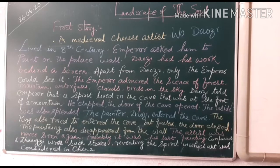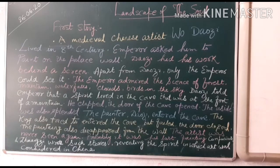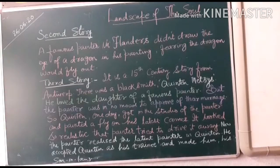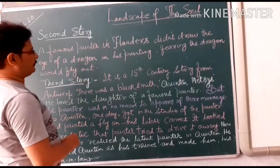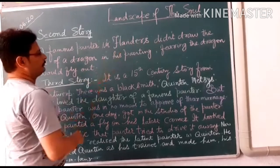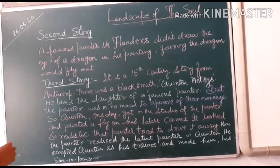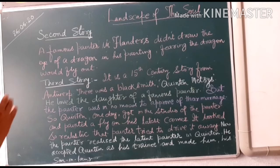Chinese philosophers like Confucius and Zhang Zai wrote such stories, revealing the spirit in which art was considered in China. Now the second story: there was a famous painter in Flanders. He did not paint the eye of a dragon in his painting because he feared that the dragon would fly off.